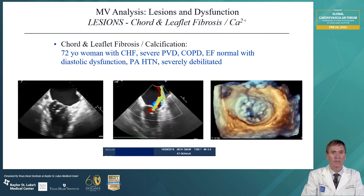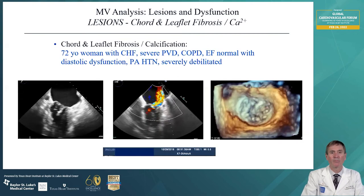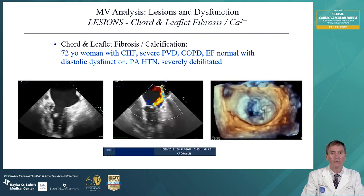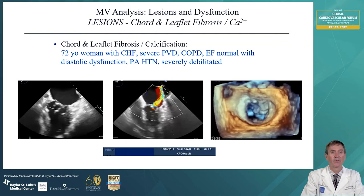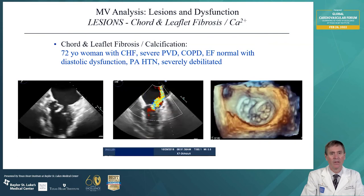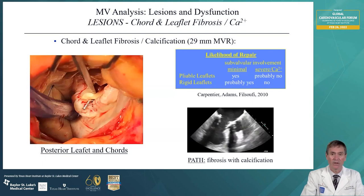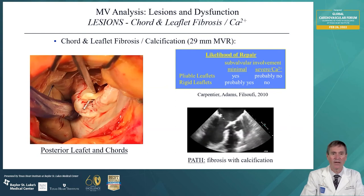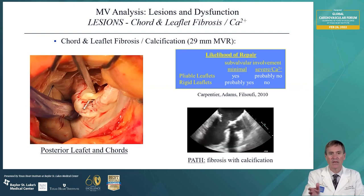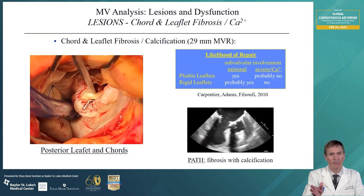What about cord and leaflet fibrosis? Here's an example of leaflet fibrosis, stiffening, and calcification — a 72-year-old woman with severe peripheral vascular disease, COPD. Her heart function was good but she had severe pulmonary hypertension and was quite frail. The capability to repair a mitral valve depends on the pliability of the leaflets versus rigidity, and also the involvement of the subvalvular apparatus. This patient had severe thickening of the cords, the subvalvular apparatus was calcified and thickened, and the leaflets were very rigid — so this is not a patient we should repair, and she did very well with a mitral valve replacement.